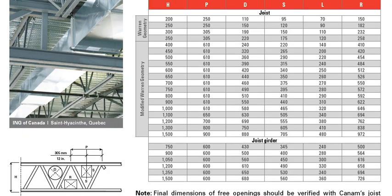In this video I'm going to talk about open web steel joists in Canada. There are different manufacturers producing open web steel joists. In this example I'm going to use the Can-Am catalog. One of the big advantages of using open web steel joists is that you can get your services through the openings in the web without having any additional cuts, as we have in the case of using regular steel beams.